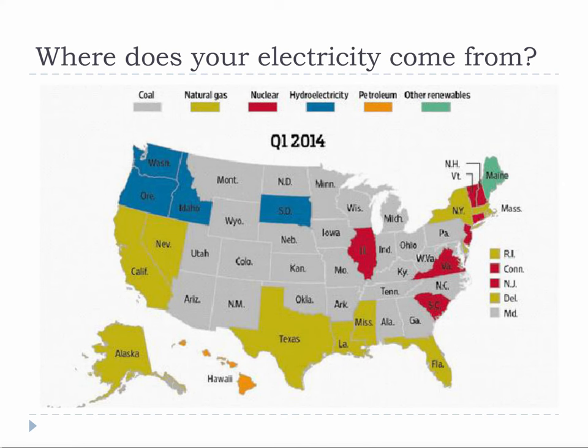This map makes some important points about where the energy comes from for different states, and there are good reasons for this distribution. Notice how pretty much only the Pacific Northwest has a lot of hydro. Also notice where the nuclear power plants are and consider population densities as well as emissions considerations. Notice how the entire center of the country is mostly coal, but a lot of the coastal areas in the Northeast are mostly gas. Coal is so common because it is so cheap, but it takes up a lot of space and we use it in a fairly dirty way.